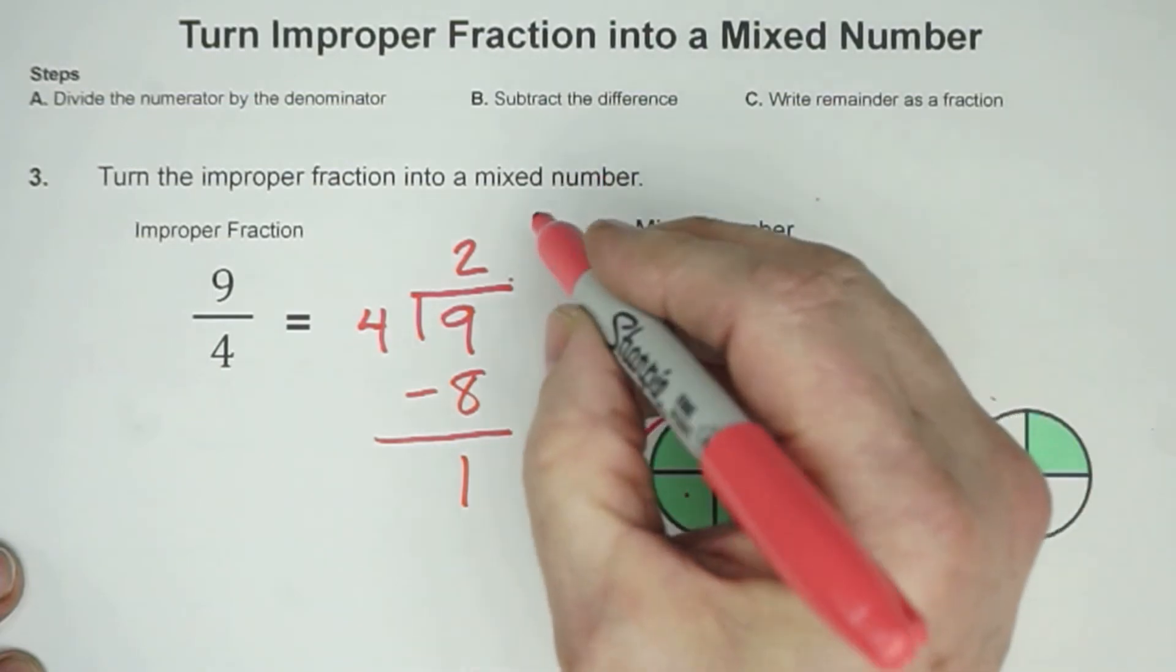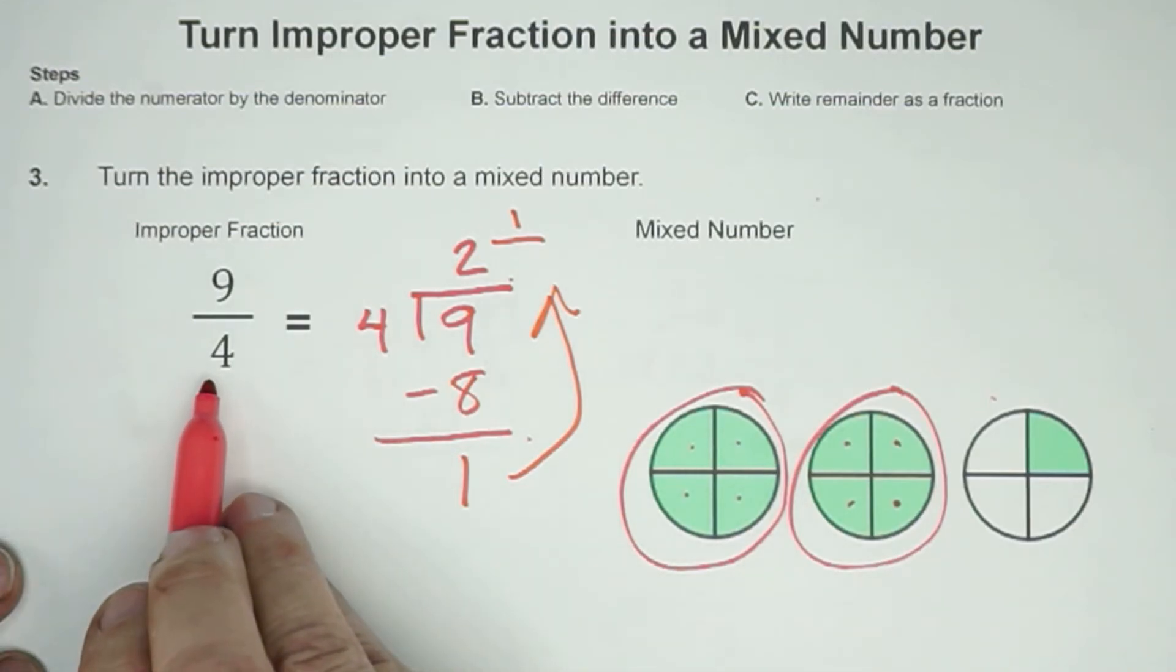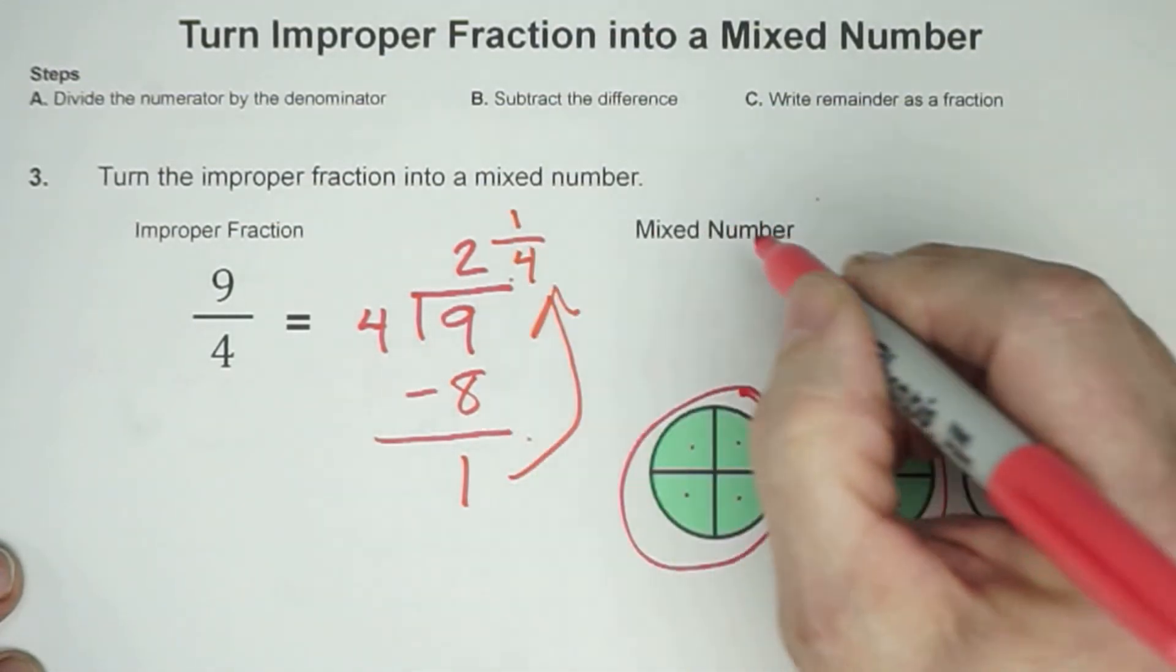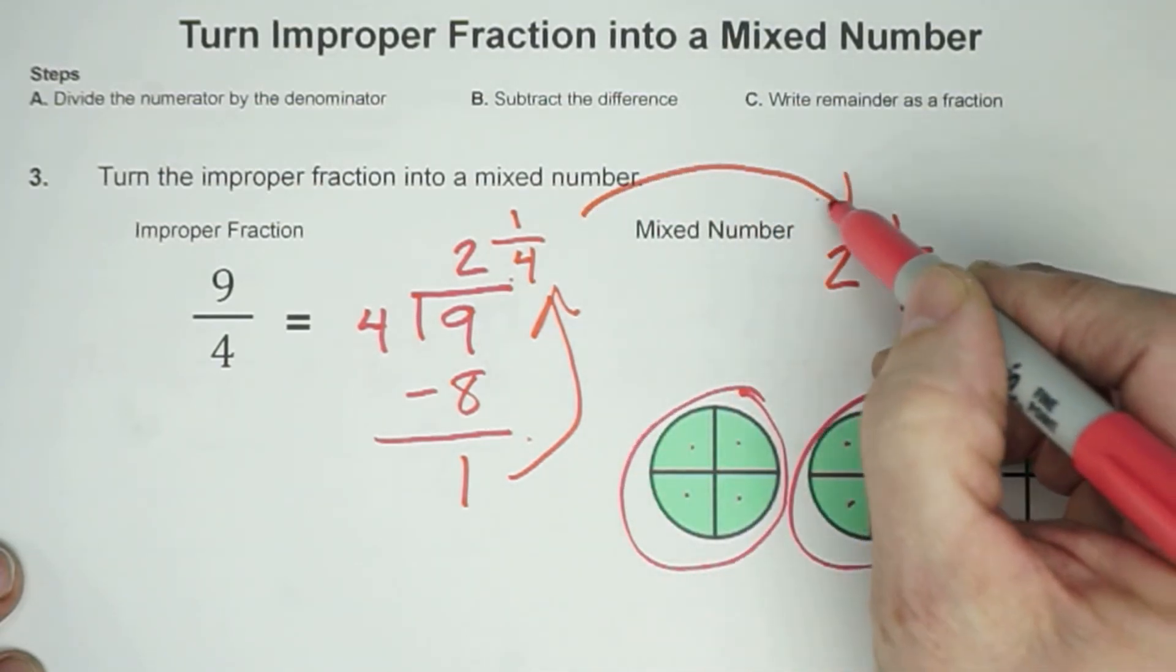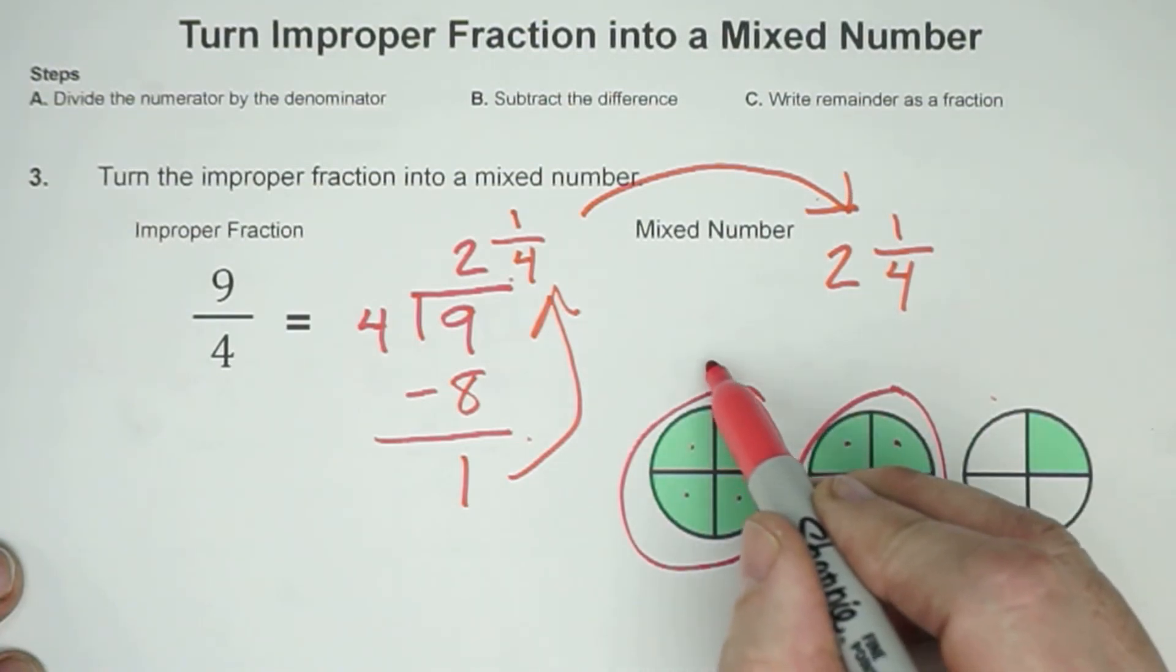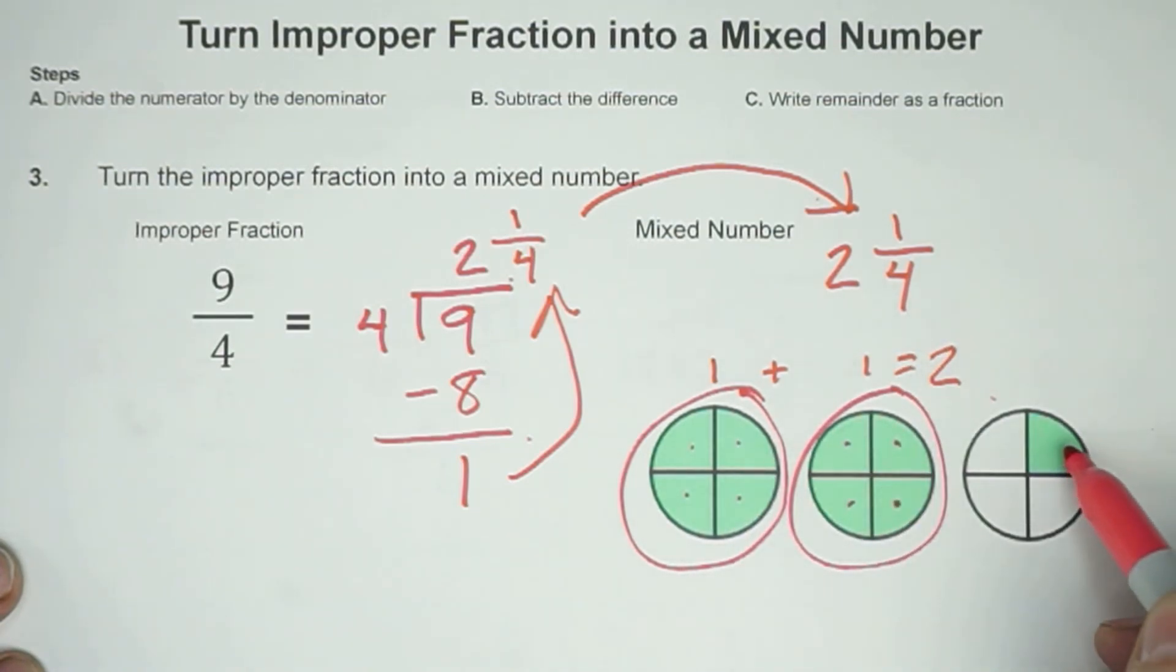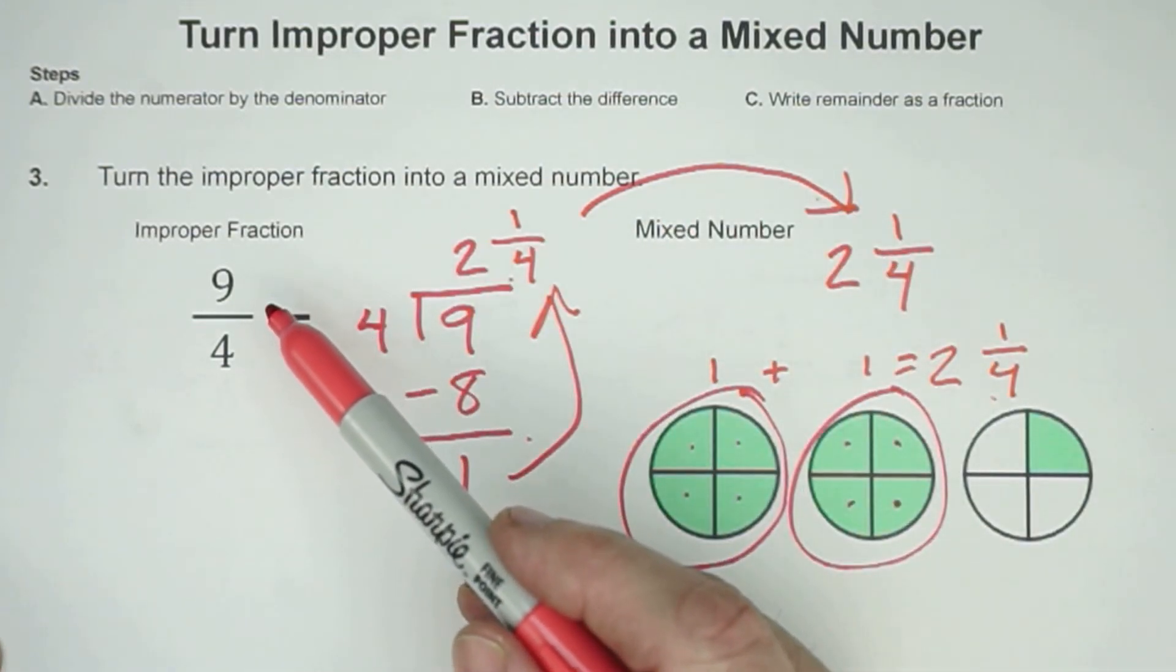Remember our remainder we're going to write as a fraction when we bring that up here. And our denominator is simply the denominator that we started with. So our mixed number would be 2 and 1/4. And we can prove that here as well. I'm seeing here's 1 whole. Here's 1 whole plus 1 whole is equal to 2 wholes here. And then this would represent 1/4. So that's how we get a mixed number of 2 and 1/4 when we change that from an improper fraction.